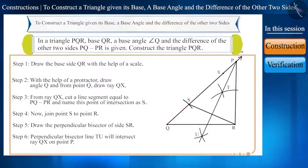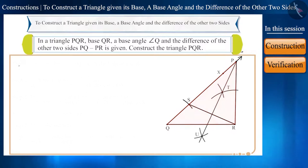Well friends, this work doesn't end just here. Now, we will check the construction of the constructed triangle. We have to prove that the length of SQ is equal to PQ minus PR, so let's prove that triangle PQR is the required triangle.